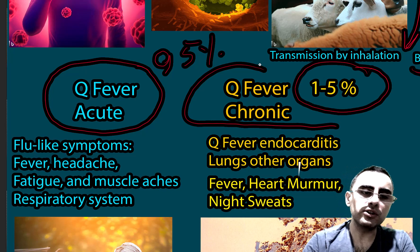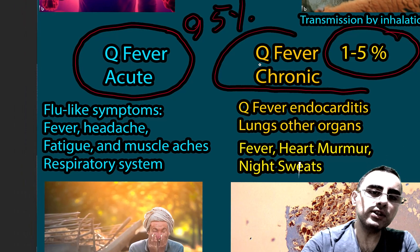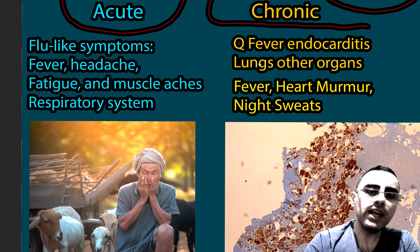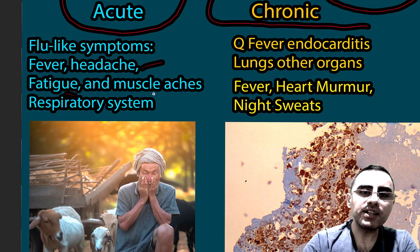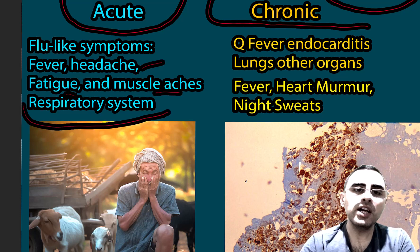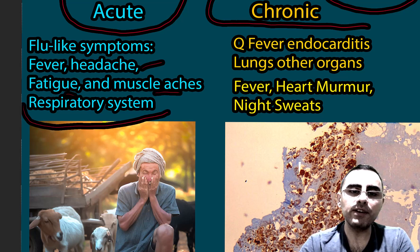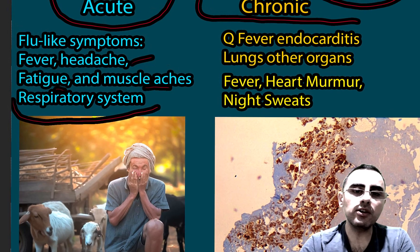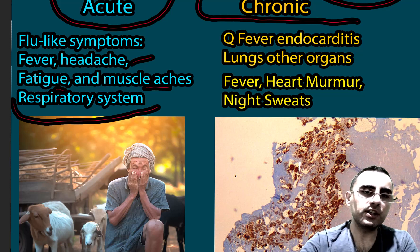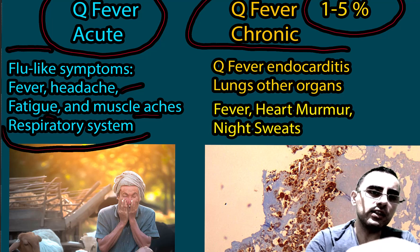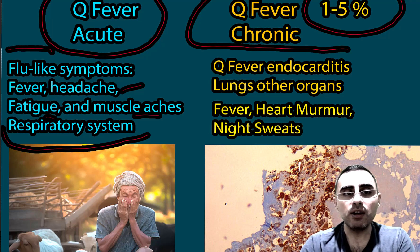Symptoms of acute Q-fever are flu-like symptoms, such as fever, headache, fatigue, and muscle ache. There are usually respiratory symptoms because this bacteria typically affects the respiratory system. It is difficult to identify specific symptoms of Q-fever because it looks just like the flu, and you cannot differentiate it from flu.